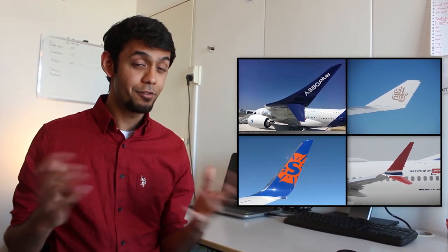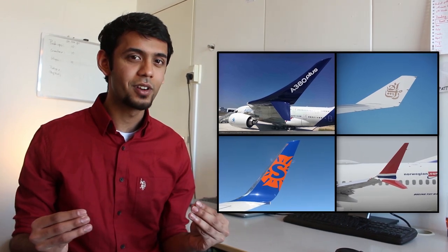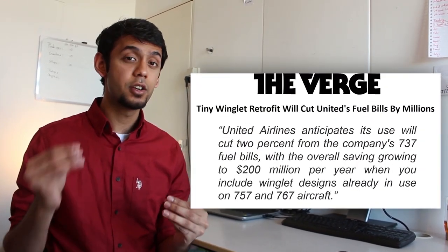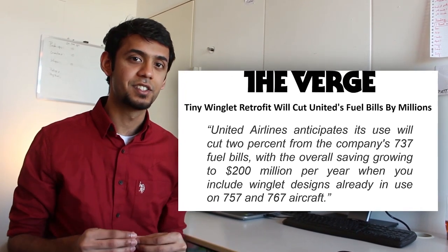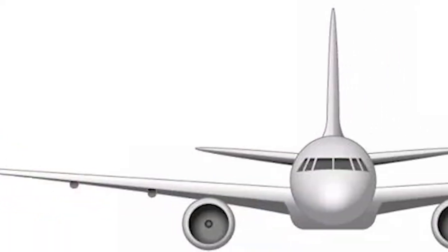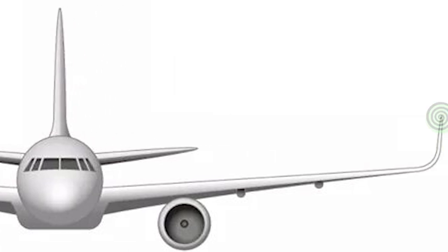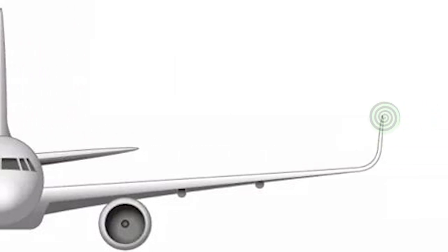Aeroplanes try to counter these wing tip vortices by using devices called winglets. You've probably seen them before. In fact, these winglets are so important that United Airlines estimates that they save about 200 million dollars just because of the winglets. These winglets reduce the strength of the wing tip vortices by reducing the leakage of pressure around the wing tips.